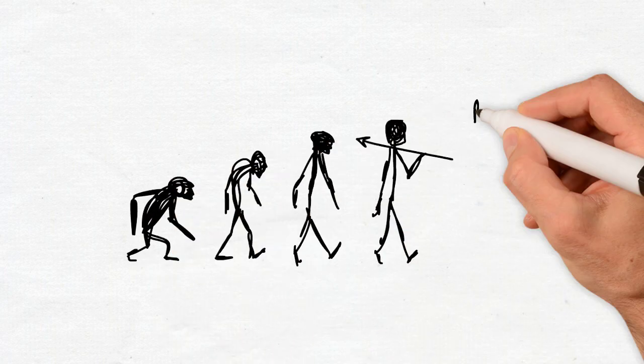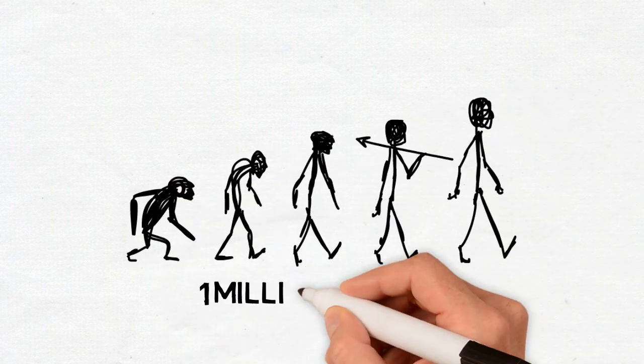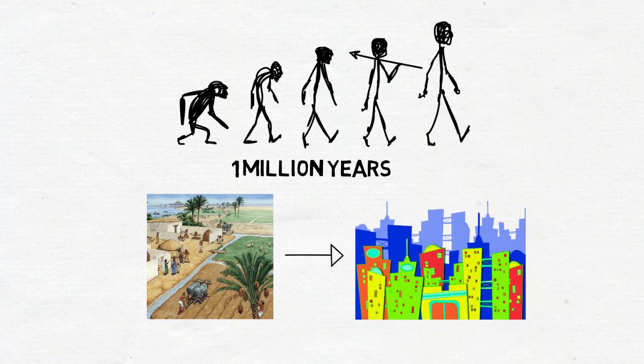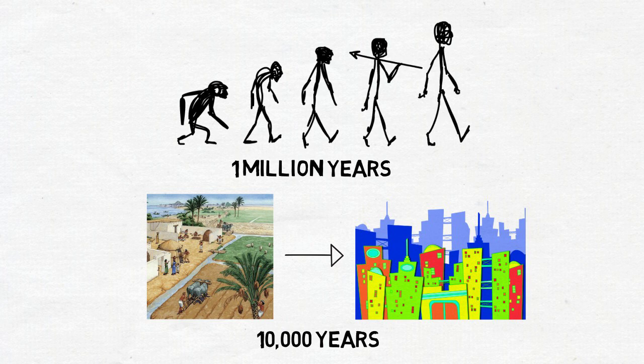While humans took millions of years to develop, agriculture has only been around for about 10,000 years and has led to other developments like the Industrial Revolution, which has made our access to food all the more abundant.